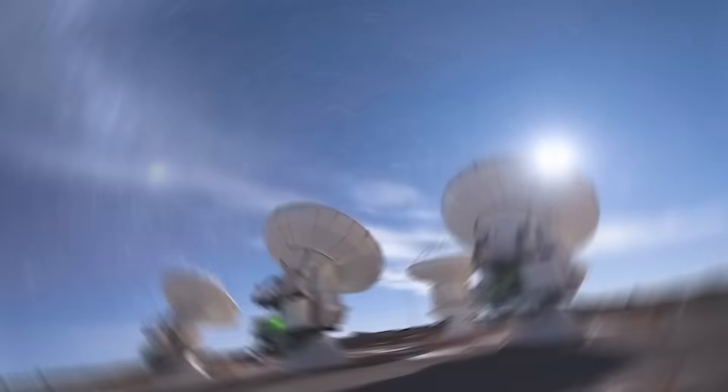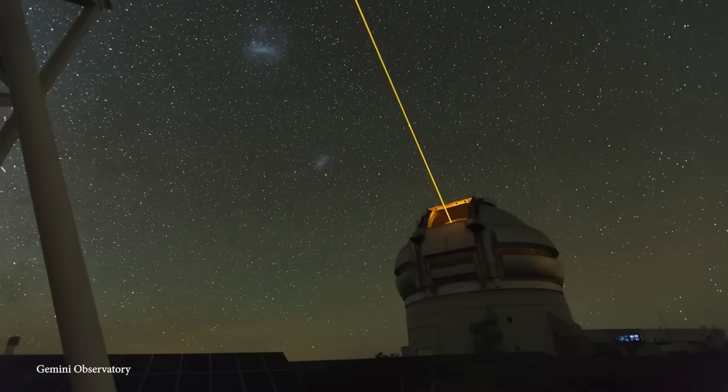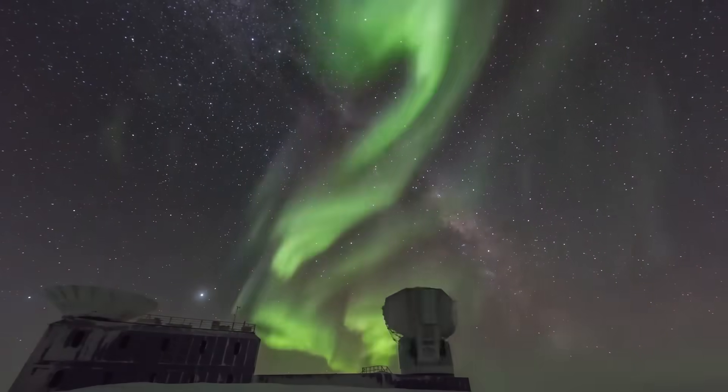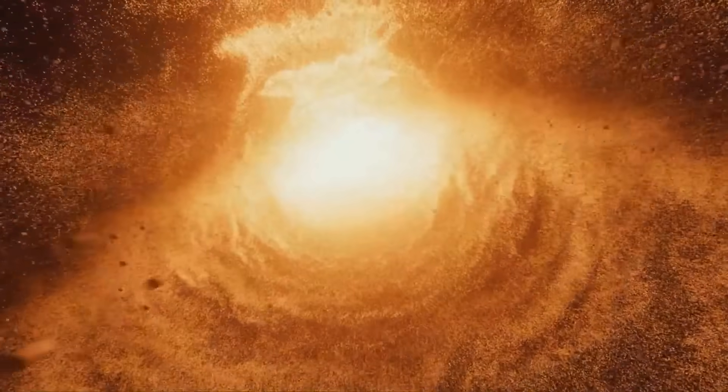For the first time in history, the International Asteroid Warning Network, a United Nations-endorsed Global Defense Coalition, has begun tracking an object from another star system. But why now? Why this one?